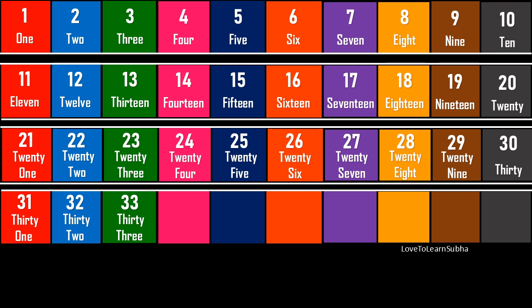33 - THIRTY (30) - T, H, R, E, E (3) - 33. 34 - THIRTY (30) - F, O, U, R (4) - 34. 35 - THIRTY (30) - F, I, V, E (5) - 35.